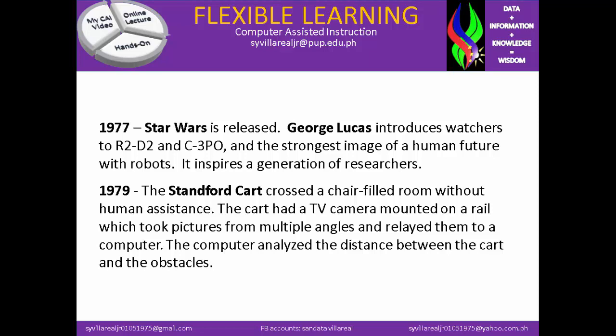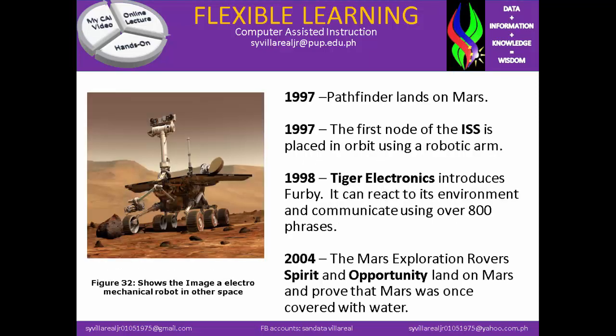In 1977, Star Wars is released. George Lucas introduces audiences to R2-D2 and C-3PO, presenting the strongest image of a human future with robots, inspiring a generation of researchers. In 1979, the Stanford Cart crossed a chair-filled room with human assistance. The cart had a TV camera mounted on a rail, which took pictures from multiple angles and relayed them to a computer, which analyzed the distance between the cart and the obstacles. Figure 32 shows the image of an electromechanical robot in outer space. In 1997, Pathfinder lands on Mars, and also in 1997, the first node of the ISS is placed in orbit using a robotic arm. In 1998, Tiger Electronics introduces Furby, which can react to its environment and communicate using over 800 phrases.